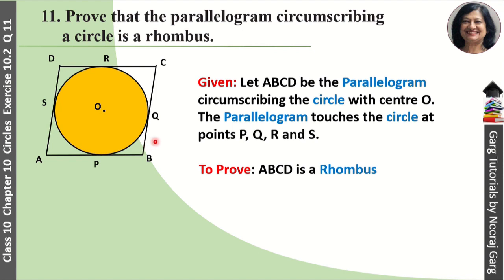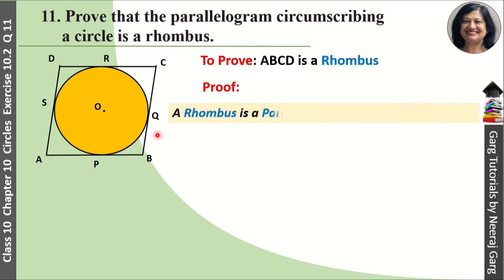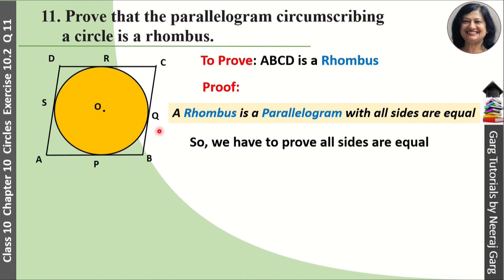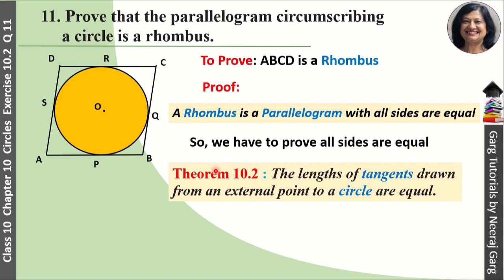We know that a rhombus is also a parallelogram, but a rhombus has all four sides equal while a parallelogram has opposite sides equal. Since we already have opposite sides equal in a parallelogram, if we prove all sides are equal, then it becomes a rhombus. For this we will use theorem 10.2: the length of tangents drawn from an external point to a circle are equal.